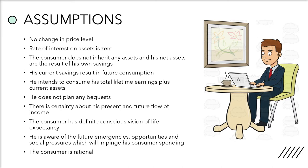There is certainty about his present and future flow of income. The consumer has a definite conscious vision of his life expectancy, that is the number of years he is expected to live. He is aware of future emergencies, opportunities and social pressures which will impinge upon his consumption spending. Finally, the consumer is rational, meaning the aim of the consumer is to maximize his utility over his lifetime, which will in turn depend on the total resources available to him during his lifetime.